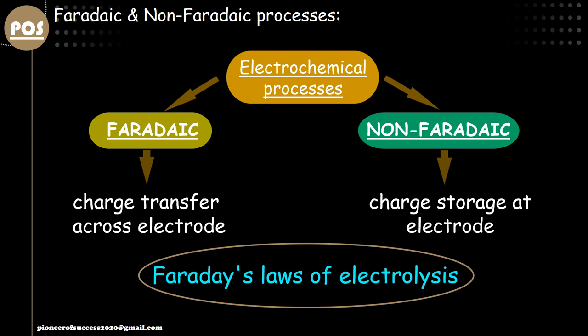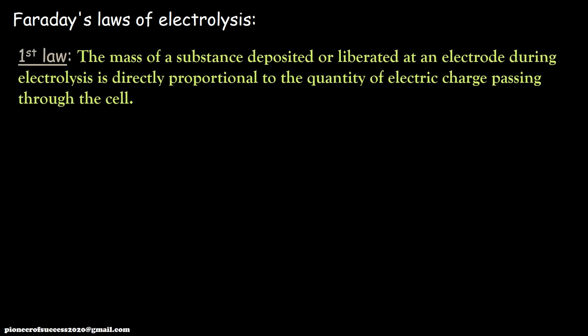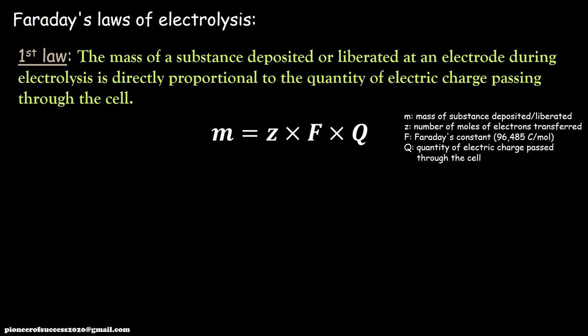Before we move on with further discussion on faradic and non-faradic, let us talk about the fundamental law of Faraday. What does the first law of Faraday relating to electrochemistry state? It states that the mass of a substance deposited or liberated at an electrode surface during electrolysis is directly proportional to the quantity of electric charge passing through the cell. In the quantitative equation, it is expressed as: m is the mass of substance deposited or liberated, Z is the number of moles of electrons transferred, F is the Faraday constant, and Q is the quantity of electric charge passed through the cell.